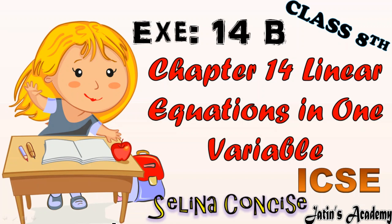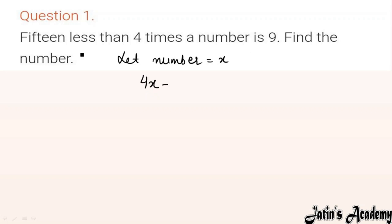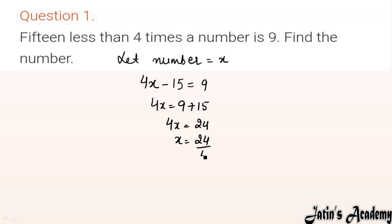Question 1: 15 less than 4 times a number is 9. Let the number be x. So 4 times the number minus 15 equals 9, meaning 4x minus 15 equals 9. Moving minus 15 to the other side gives 4x equals 9 plus 15, which is 24. So x equals 24 divided by 4, which gives x equals 6. The value of the number is 6.